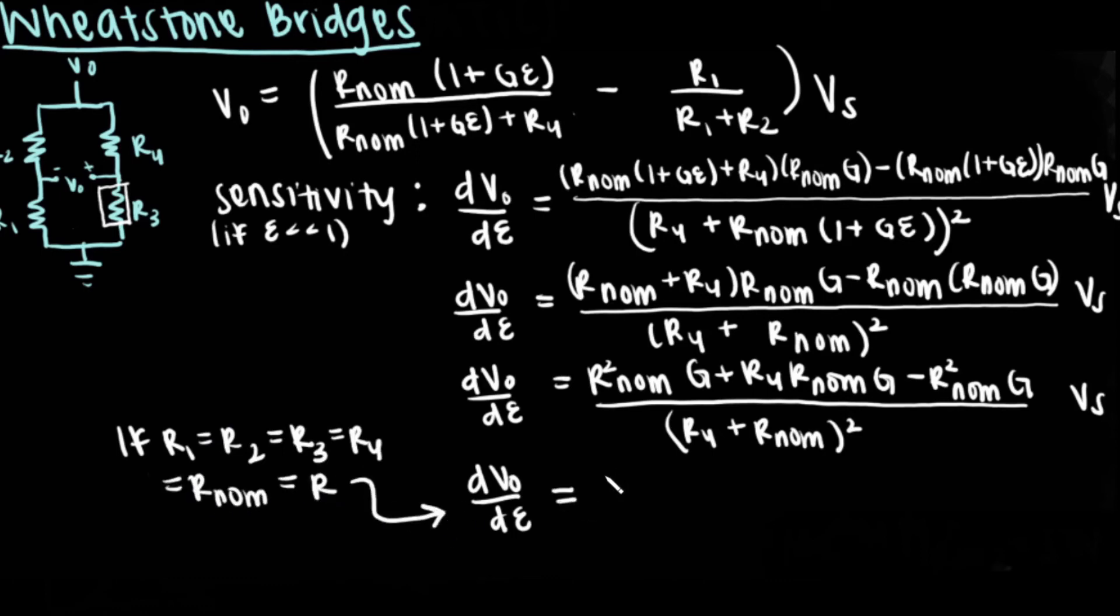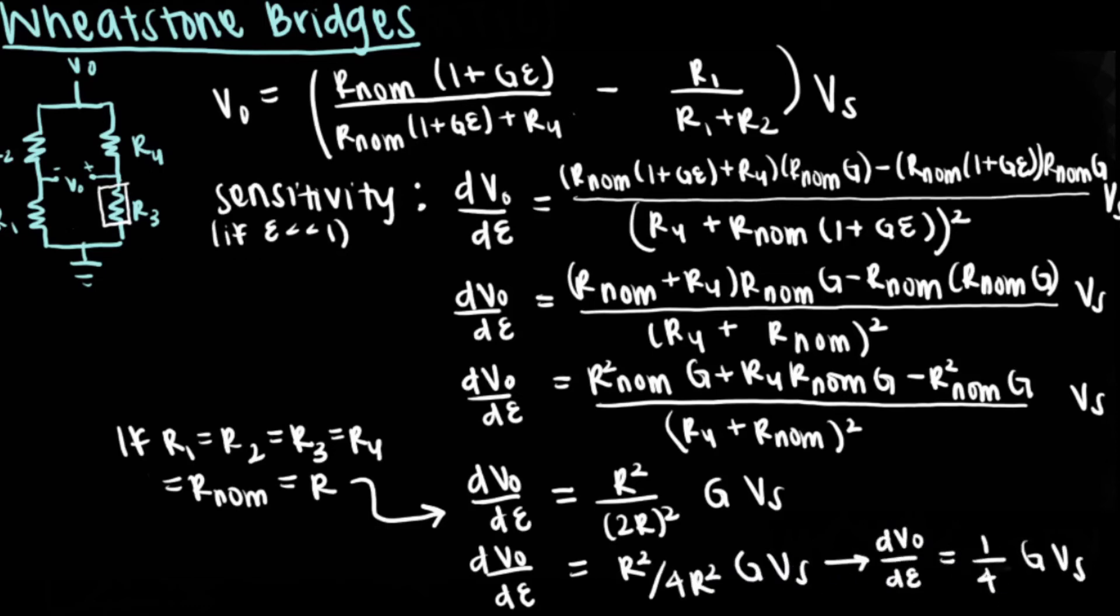If we use the same equation as before, R1 is equal to R3, which is equal to Rnom times the sum of 1 plus the gauge factor multiplied by strain. Plugging these values into the equation for the wheatstone bridge, we find that Vout is equal to the following equation.